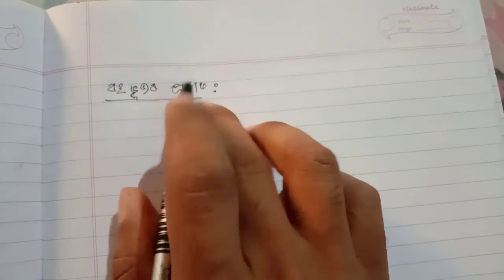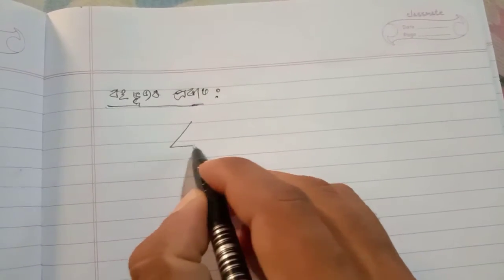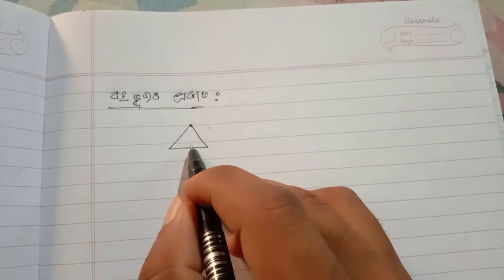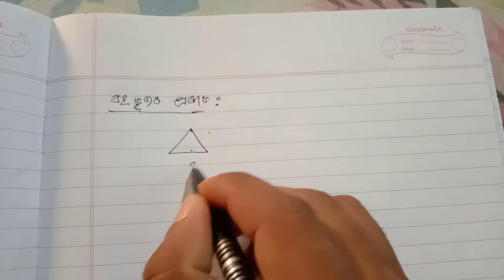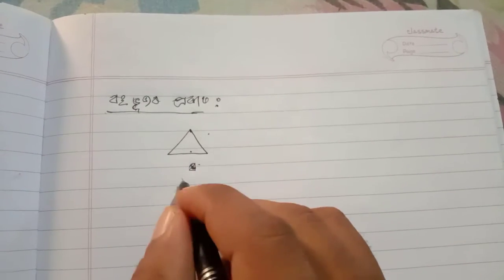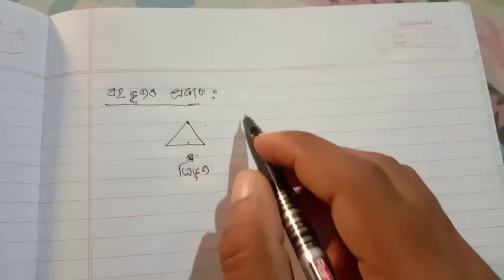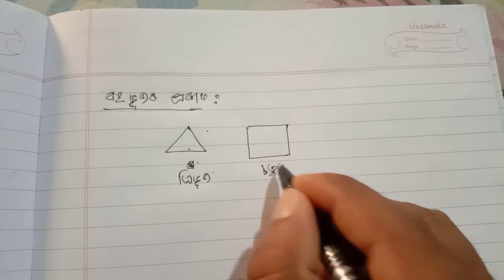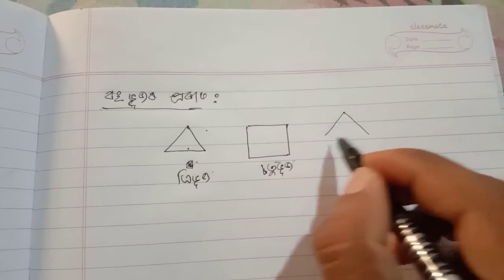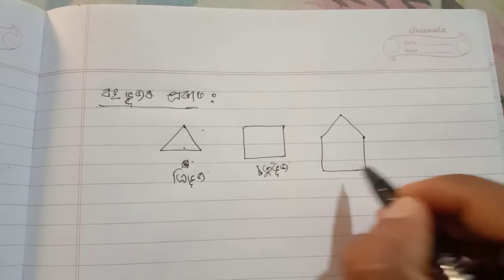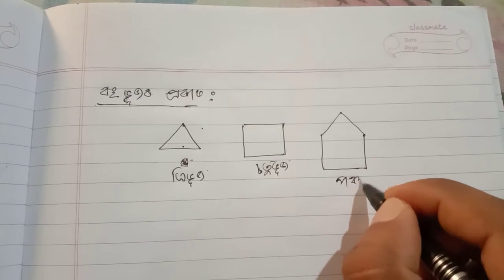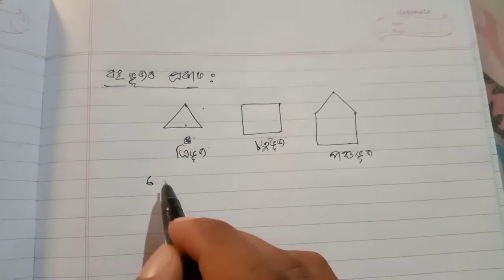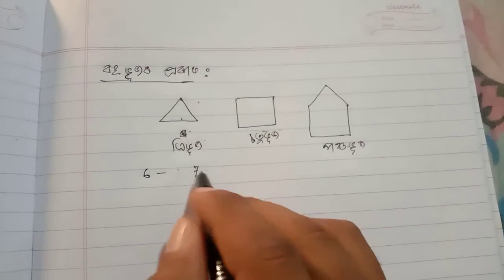A polygon with a minimum of three sides is called a triangle (Tribhuj). With four sides it is a quadrilateral (Chaturbhuj). With five sides it is a pentagon, with six sides a hexagon, with seven sides a heptagon — and so on we name each polygon.